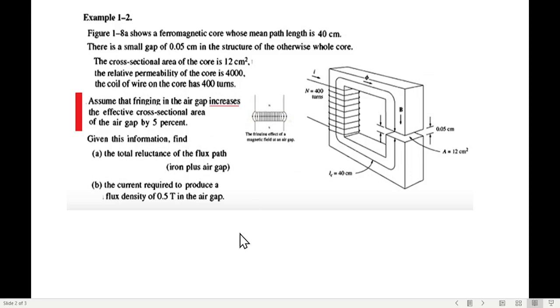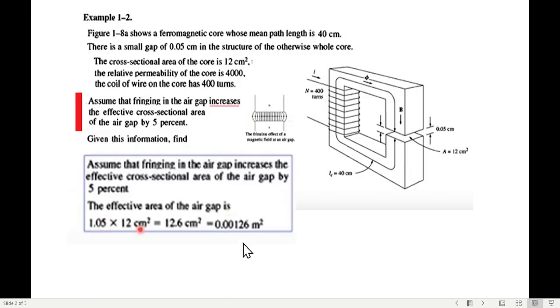Now how to solve this? In the solution what I have done is that I have multiplied this area which is 12 cm square by 1.05 to cater for increase in 5%, and so the total area becomes 12.6 cm square. Now this is the question some students ask: why are you multiplying it by 1.05?